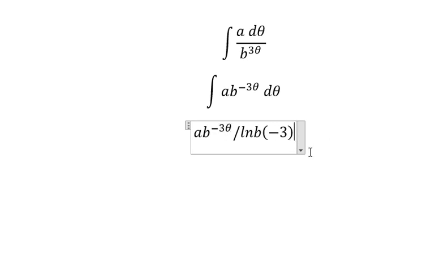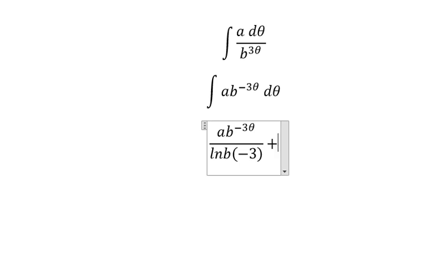And that's the final answer. We know that ln b does not connect with this negative 3, so I put it in here to make it clear that it should be like this.